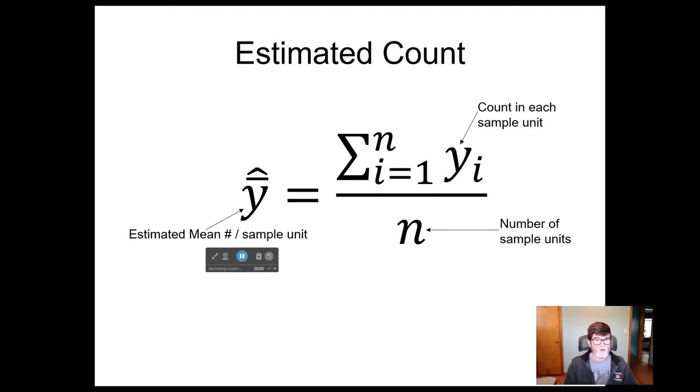We call this y bar, and we give it a little hat to indicate that it's an estimate, to distinguish it from y bar without a hat, which is the true mean across the sample population. We don't know what that value is, but we know there is one. So we can talk about y bar, the true mean, and then we have y bar hat, which is our estimate, or sample mean, as it's sometimes called as well.